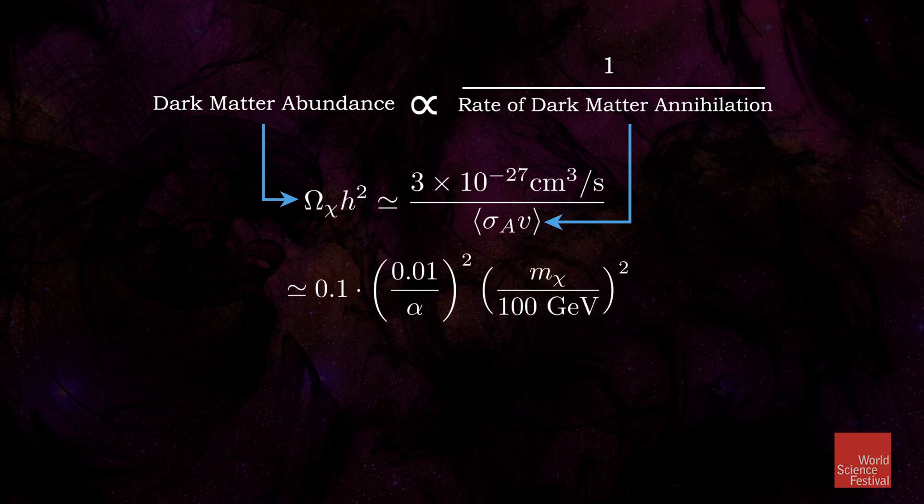The wonderful, beautiful, perhaps unexpected fact is that when you do this calculation for supersymmetric particles, the typical amount that will remain for the stable ones is pretty close to the amount of dark matter that observations suggest should be out there.